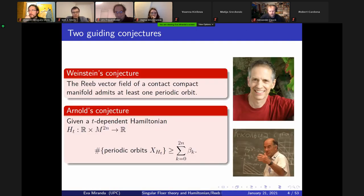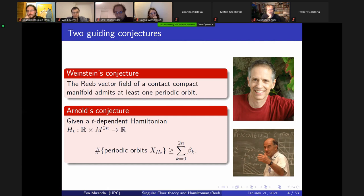Two guiding conjectures for the non-singular theory: the Weinstein conjecture, which conjectures that the Reeb vector field of a compact contact manifold has at least one periodic orbit — this was proved in dimension three. The other is Arnold's conjecture, which gives a lower bound on the number of periodic orbits using the Betti numbers. Arnold's conjecture was what put Floer in this business, though ultimately the proof comes from the fact that Floer homology equals Morse homology, so it doesn't depend on the Hamiltonian.